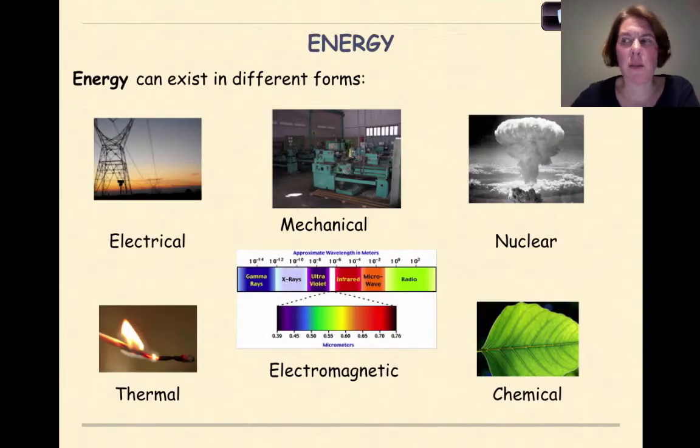Let's look at some different types of energy. Energy can exist in different forms. We can have electrical energy, mechanical energy, nuclear energy which we'll talk more about when we get to nuclear chemistry, thermal energy as we see in heat, electromagnetic energy, and finally chemical energy that would exist in this leaf as photosynthesis.